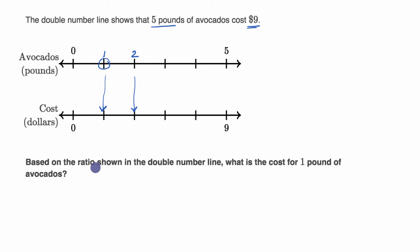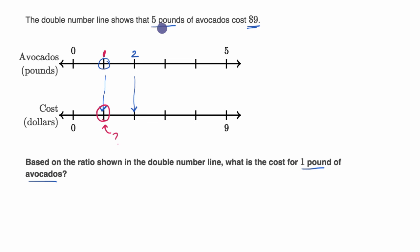Based on the ratio shown in the double number line, what is the cost for one pound of avocados? Pause the video and think about it. One pound of avocados on the top number line — we look at the second number line — the cost would be right over here. We could just set it up as a ratio. If I have five pounds of avocados, it is going to cost nine dollars. So the ratio of pounds to dollars is five to nine.